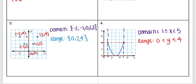For the next one, the graph was connected, so I needed compound inequalities. The furthest left the graph went was at one, the furthest right was at five. The lowest point was zero and the highest point was four. Since both endpoints were closed circles, all of the inequality symbols have lines underneath them.